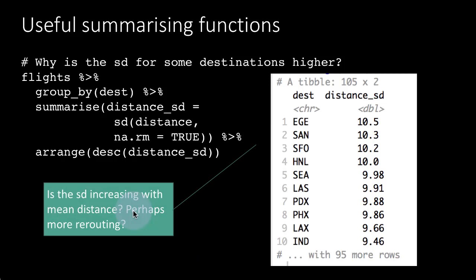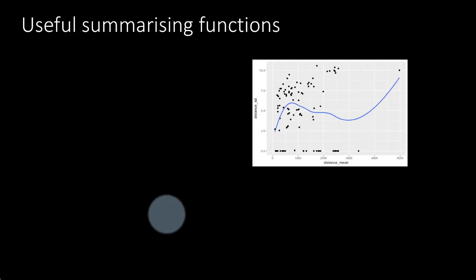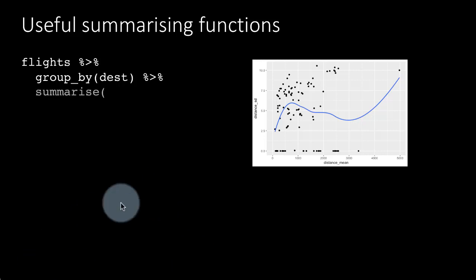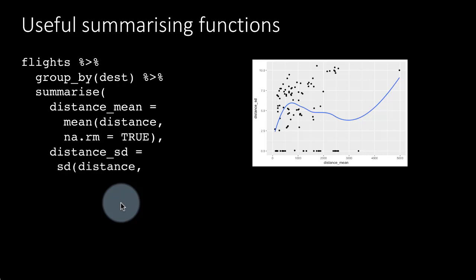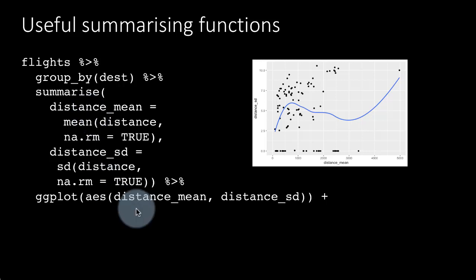So we have our hypothesis that maybe the SD is increasing with mean distance. Perhaps more rerouting occurs because of the distance. So we could try to verify this hypothesis by doing flights group by destination, summarize distance_mean is mean of distance na.rm equals true, distance_sd is sd of distance na.rm equals true. So we are speculating that with the increasing distance there is likely to be more variation in the distance, and we are trying to verify that hypothesis.